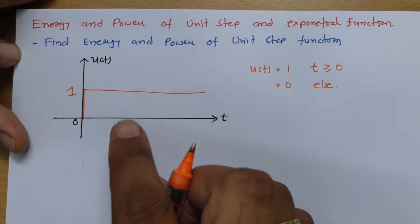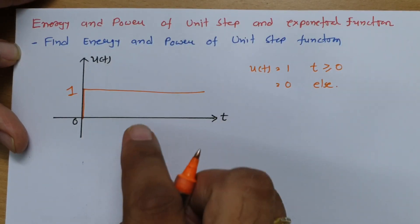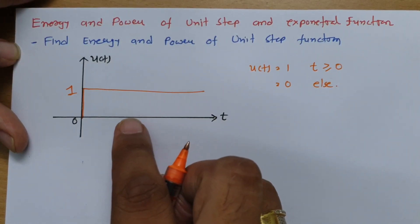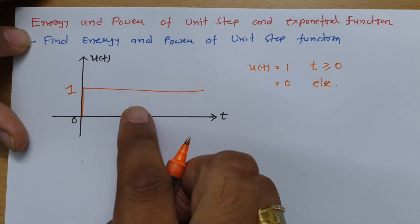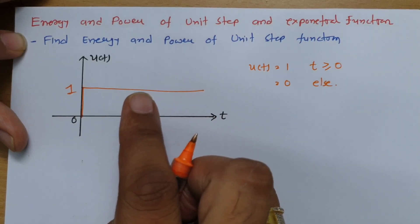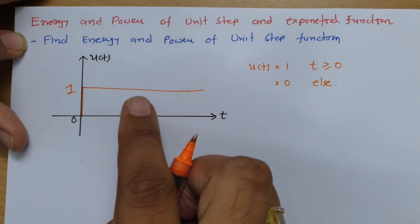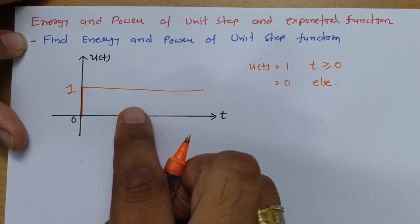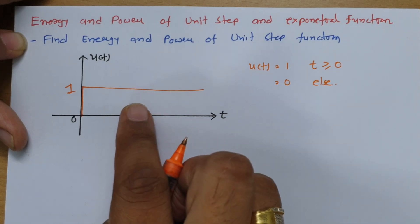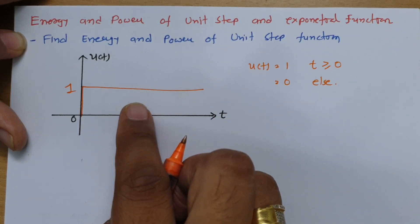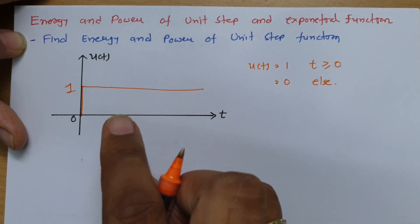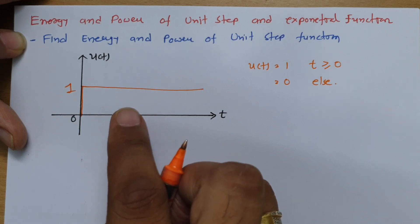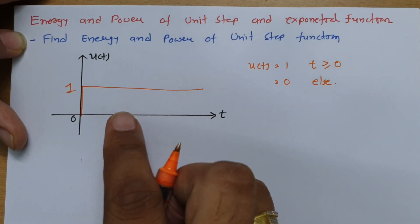One thing that is very clear about the unit step function: it is not a periodic signal. Since it is not periodic, we should first calculate its energy, and if it turns out not to be an energy signal, then we calculate its power.